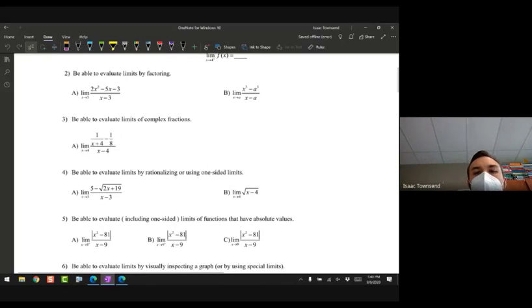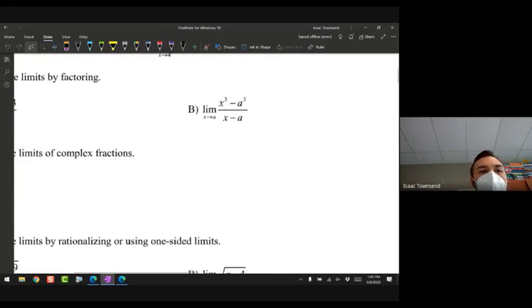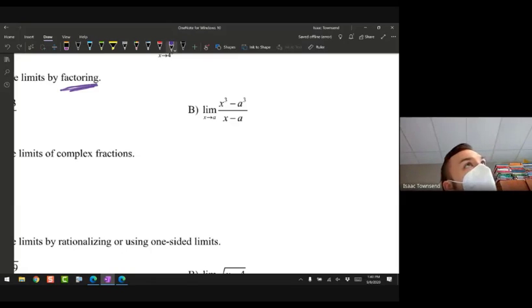All right, well the directions do give me a hint here. Normally you don't have any kind of hint, but if you want to evaluate limits you're going to hope that direct substitution works. But this time if I plug in a into here and a into here, we end up with indeterminate form zero over zero.